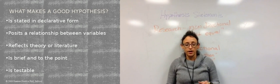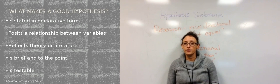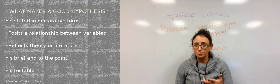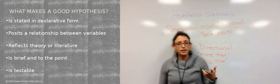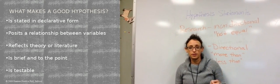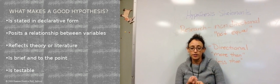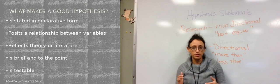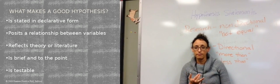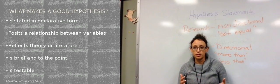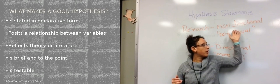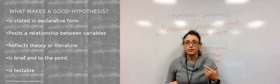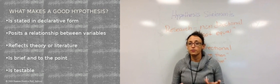What makes a good hypothesis statement? Hypothesis statements can be very simple or very complicated, but I like them to be simple. Basic hypothesis statements include five things. One, you're going to state it in declarative form — it's going to be a sentence, not a question, ending with a period. Two, you're going to state some kind of relationship between variables — not equal, greater than, less than, or in the case of the null hypothesis, the groups are equal.